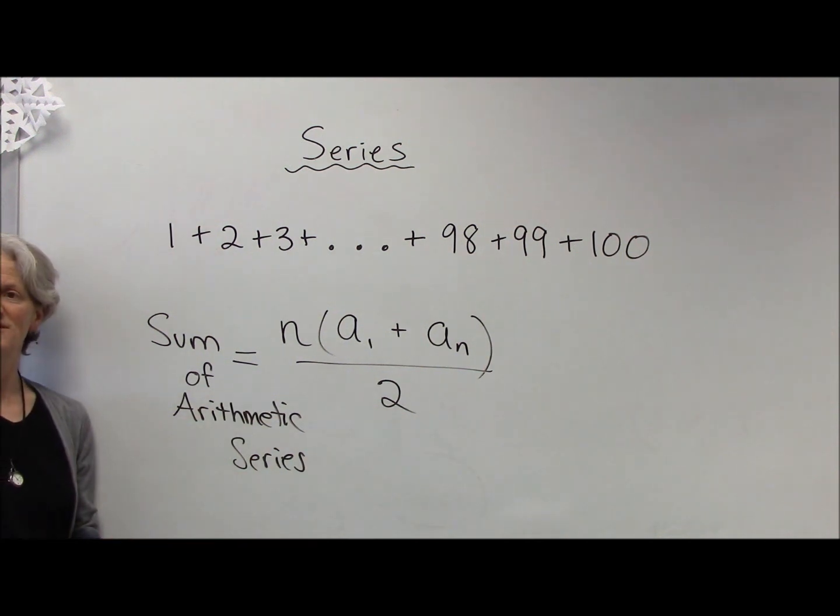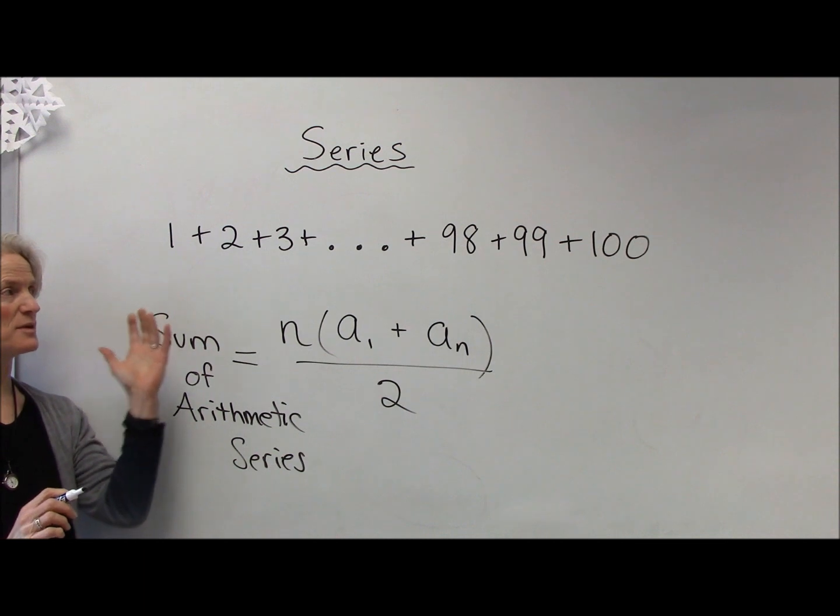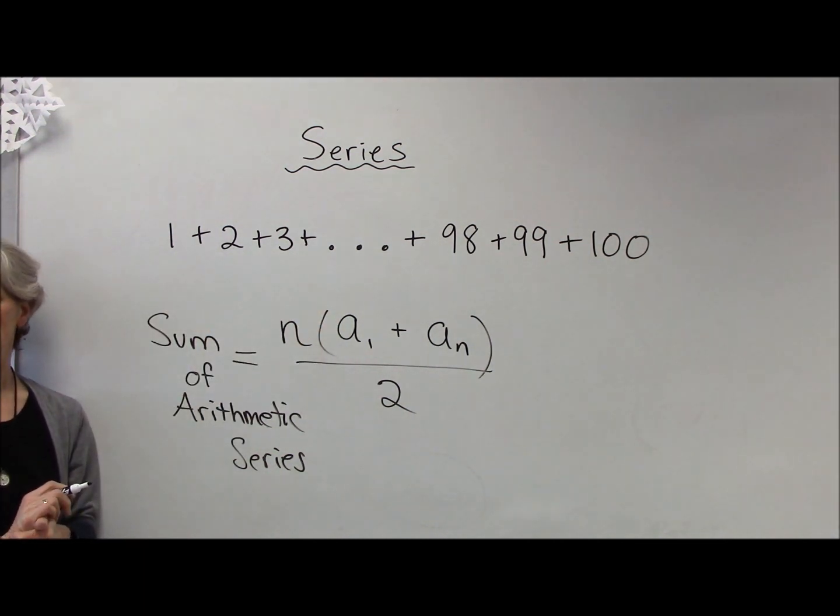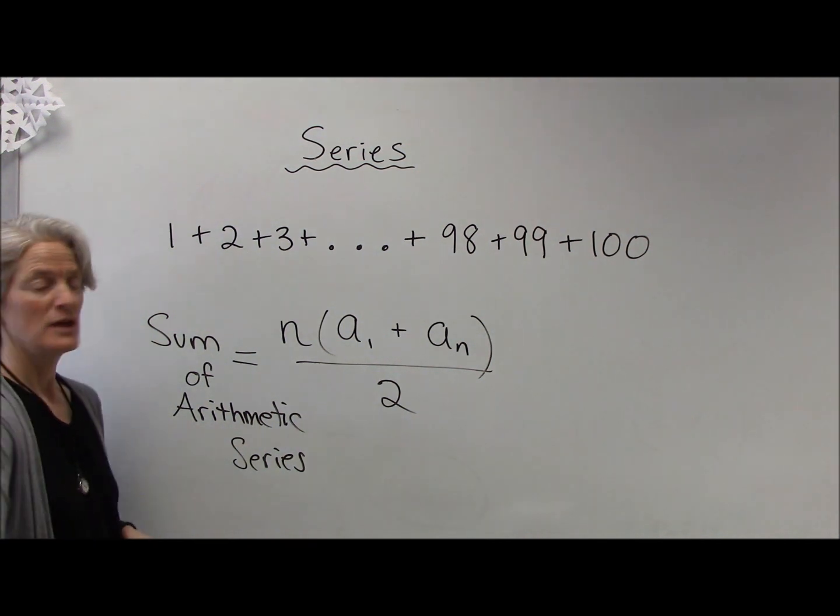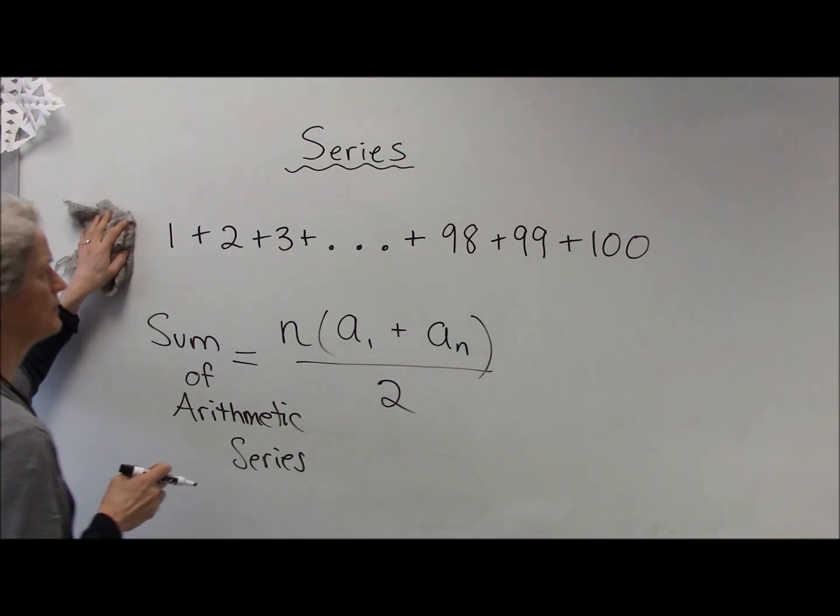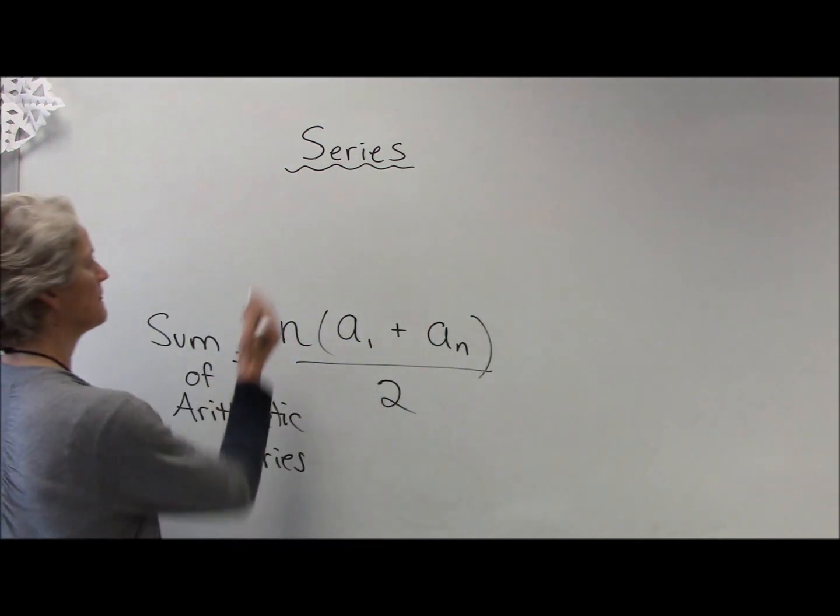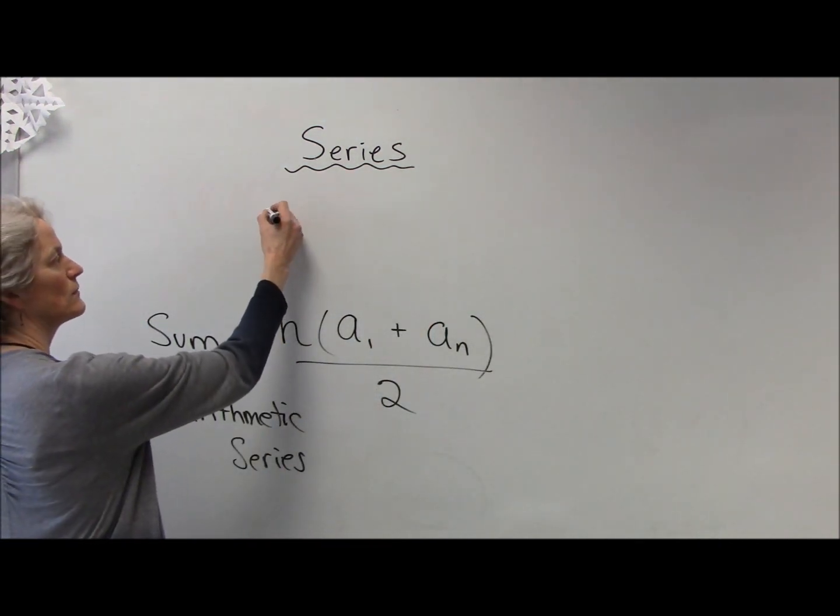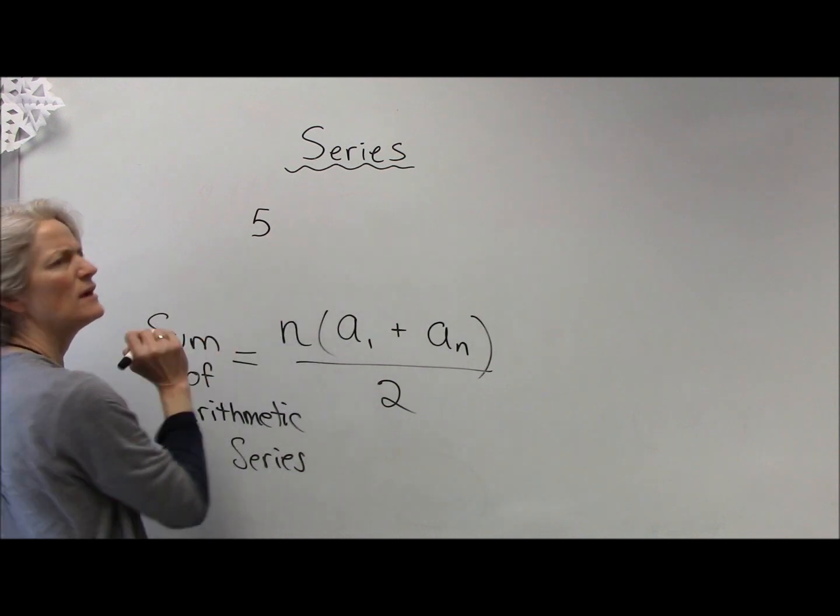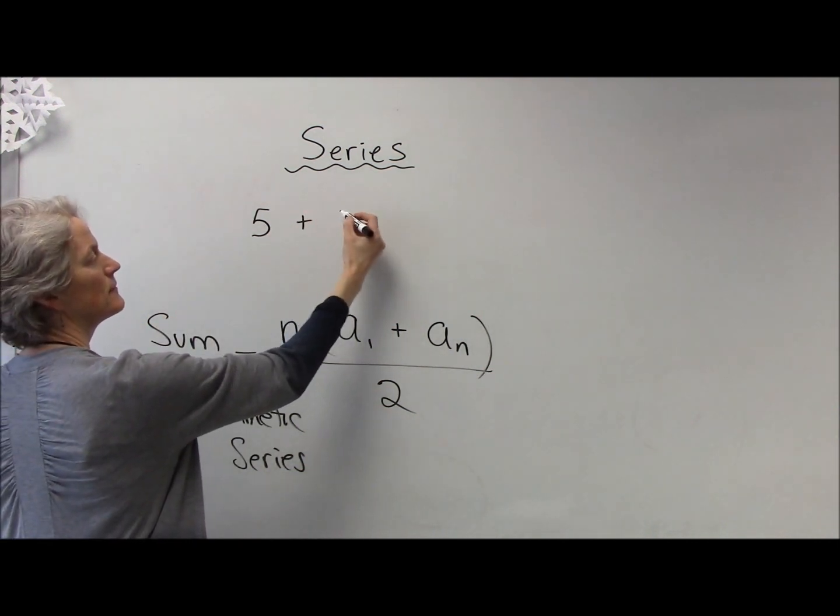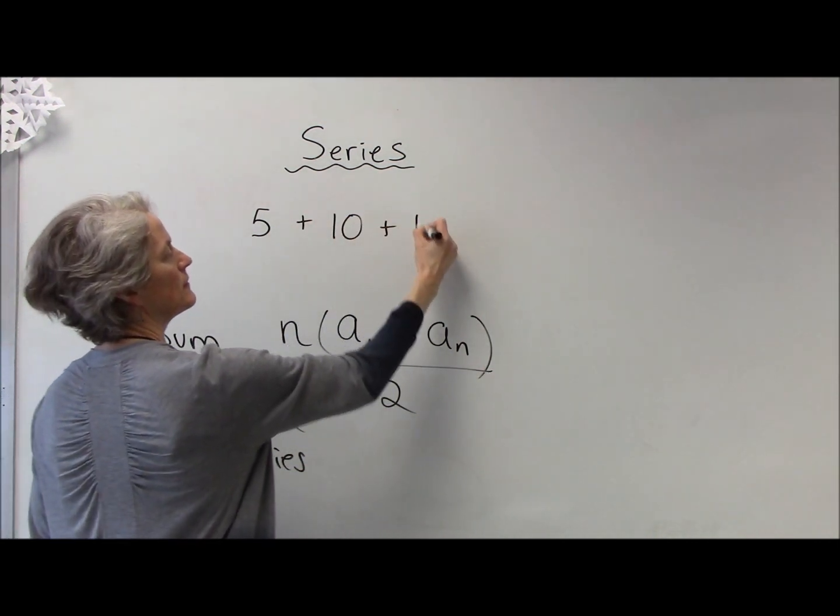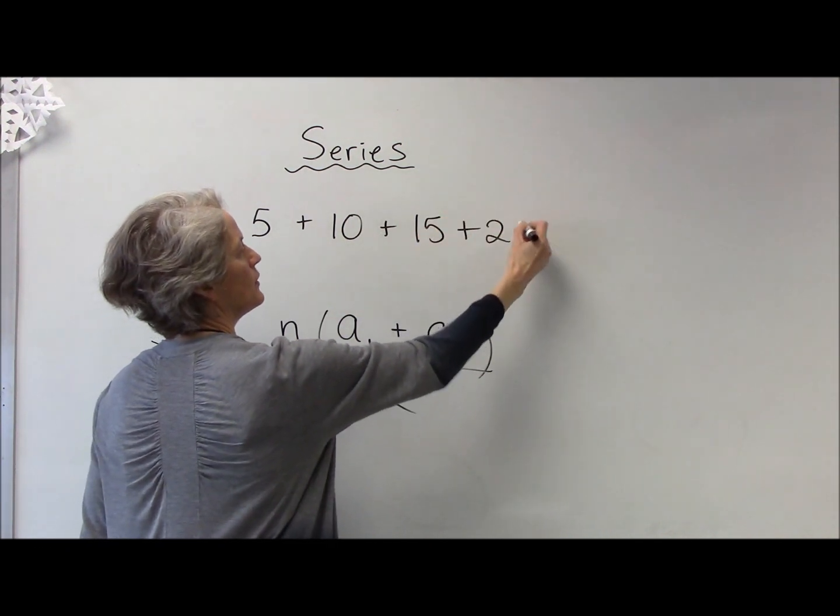Pretty clever, isn't it? Now it has to be an arithmetic series—it has to be one that has an arithmetic pattern—but that will work every time. So even if you're not counting by ones, let's say you're counting by fives. Let's do a short one just to make sure it works. So let's do like 5, 10, 15, 20. I just want to see if this thing actually works.